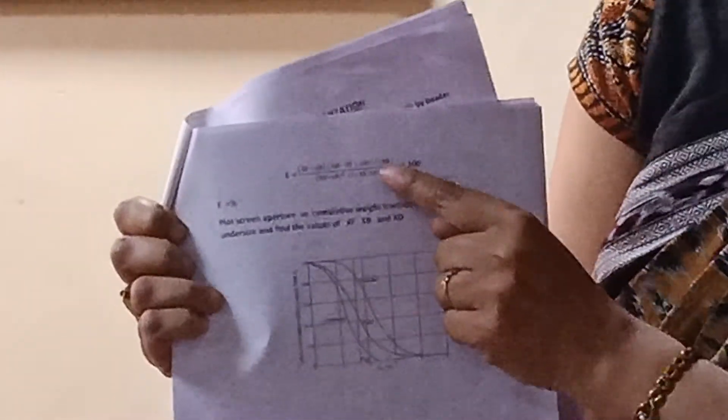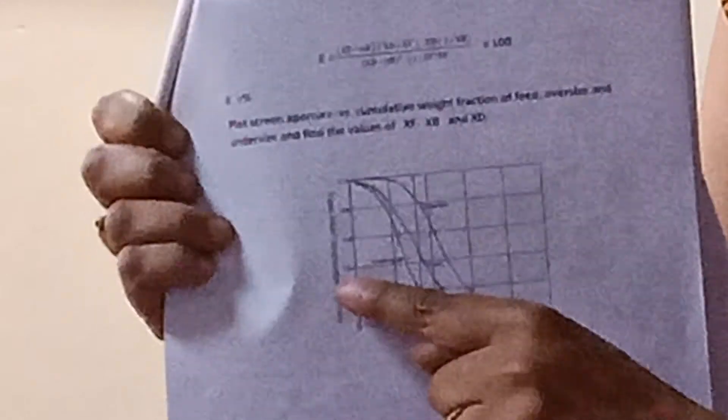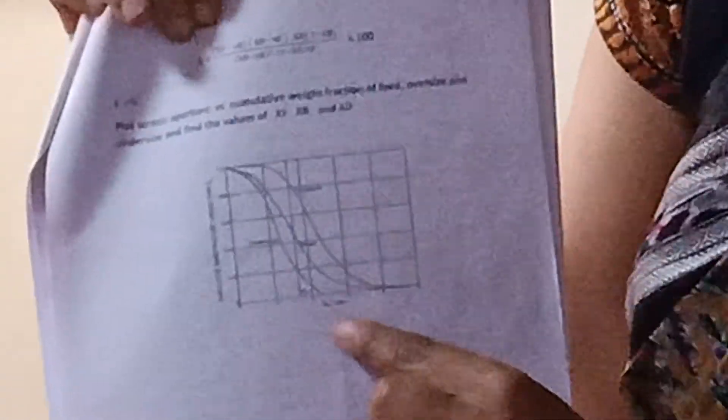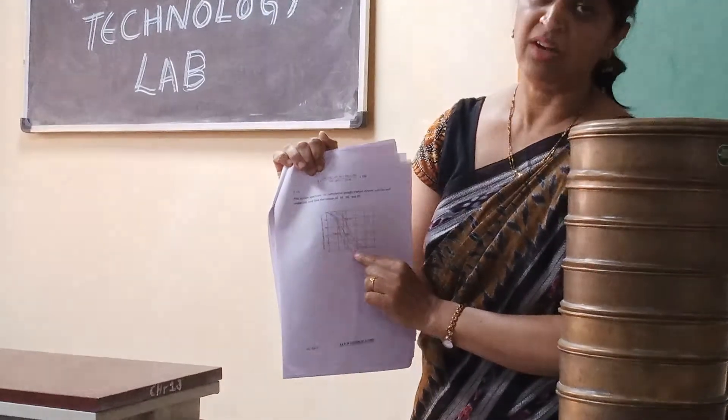The effectiveness is: recovery into the product multiplied by rejection, into 100. The formula is given by E = (XF − XB) × XB × (XB − XF) × XT × (1 − XB), all divided by (XT − XB)² × (1 − XF) × XF. The XF, XB, and XT values you will get from the graph. The graph to plot is the cumulative mass fraction of the feed, oversize, and undersized particles versus the particle diameter.